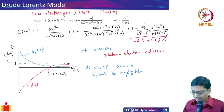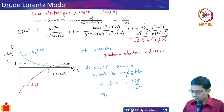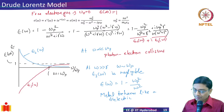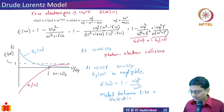In the high-frequency regime, epsilon equals one minus omega-p squared over omega squared, and the metal effectively behaves like a dielectric. At low frequencies, epsilon-one is negative, meaning the induced polarization opposes the incident electric field — that is why we get negative epsilon at low frequencies.